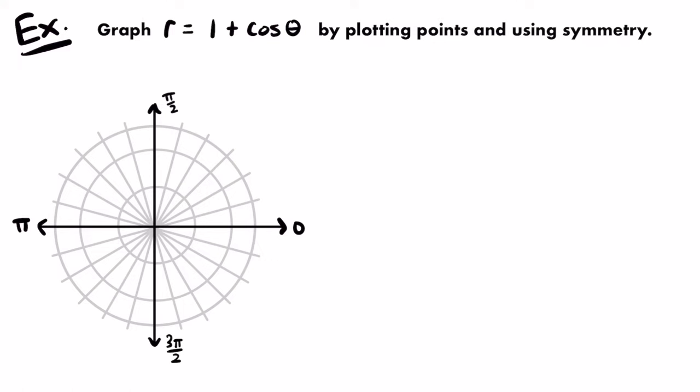Let's take a look at an example where we graph a more complicated polar equation using polar coordinates and symmetry. We want to graph r equals 1 plus cosine theta by plotting points and using symmetry. This polar equation does not look like any of our basic polar equations, so we can't quickly identify it as a circle or a line — it's going to be some other shape. The first thing to do is check for symmetry.